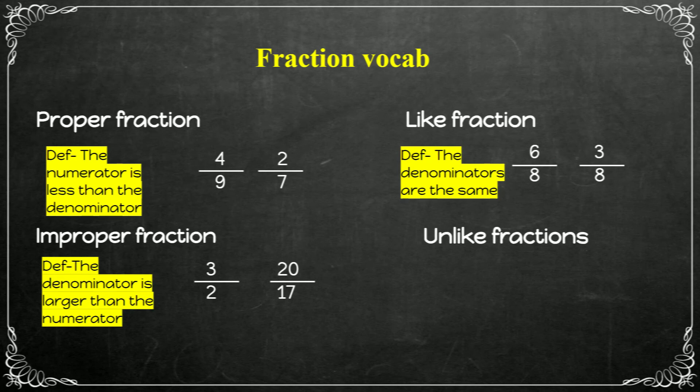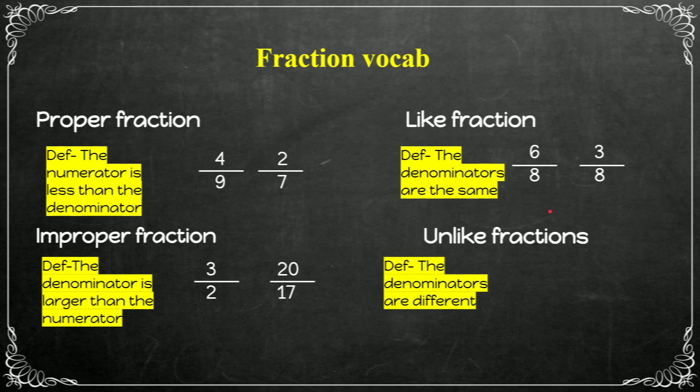And we have unlike fractions. The definition is the denominators are different. It's the opposite of like fractions. Let's draw the fractions. Seventeen is not the same as 60. So these both fractions are not like fractions. They're unlike fractions because they're both different.